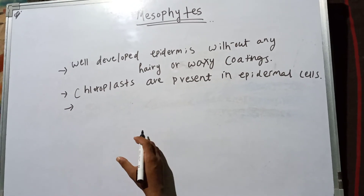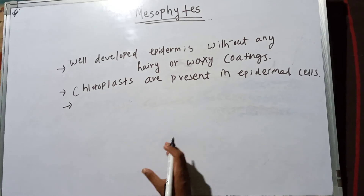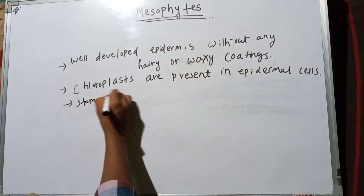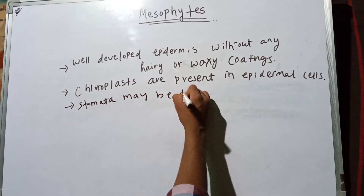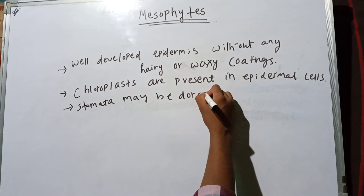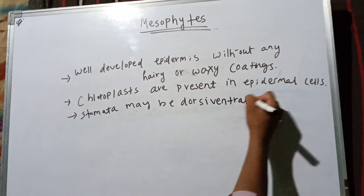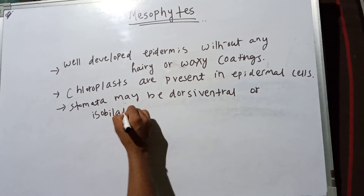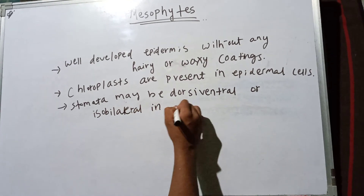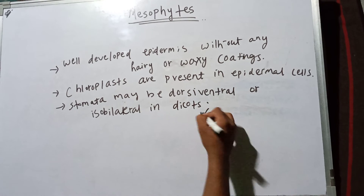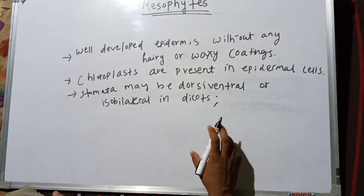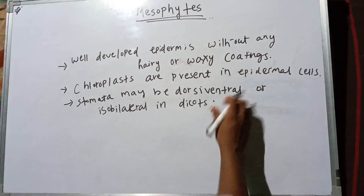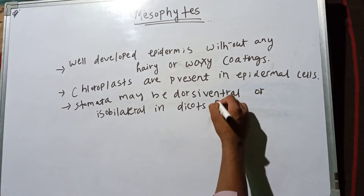The stomata may be dorsiventral or isobilteral in dicots, and in monocots as well.